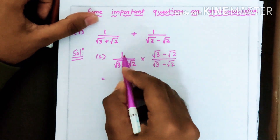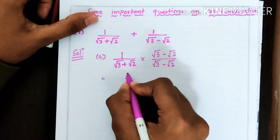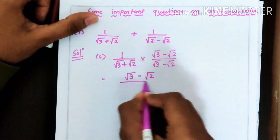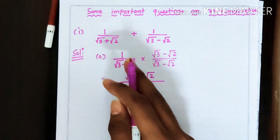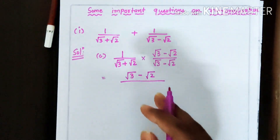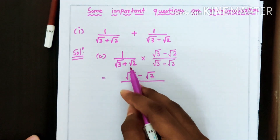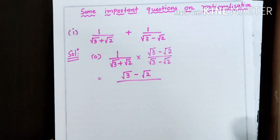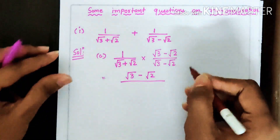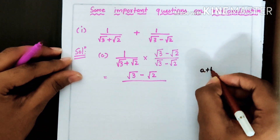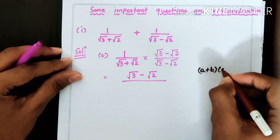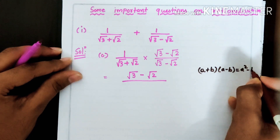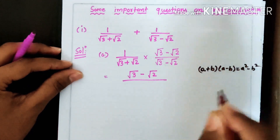When we solve this, in the numerator it will be (√3 − √2), because whenever something is multiplied by 1, the same answer comes. In the denominator, we apply the identity (A + B)(A − B) = A² − B².